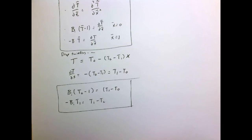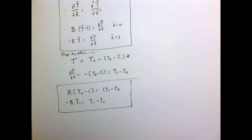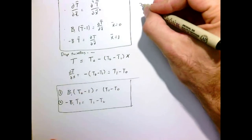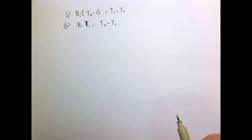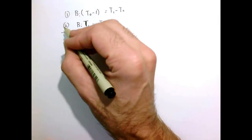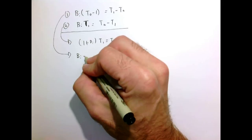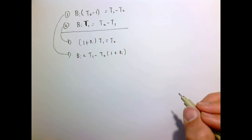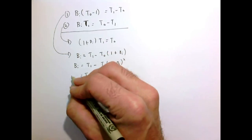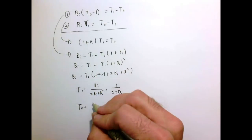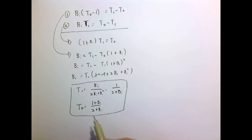We have two equations for two unknowns: the temperature at x equals zero and at x equals one. Starting with equation 2 we can simply rearrange it, then substituting into equation 1, we find that T(1) equals 1 over (2 plus Bi) and T(0) equals (1 plus Bi) over (2 plus Bi), where Bi is the Biot number.